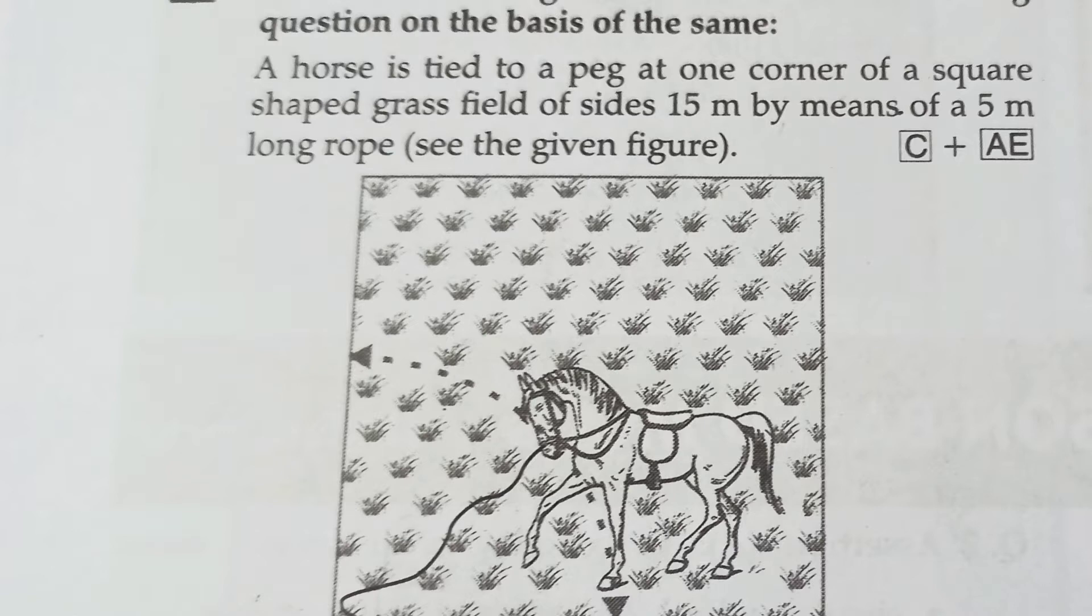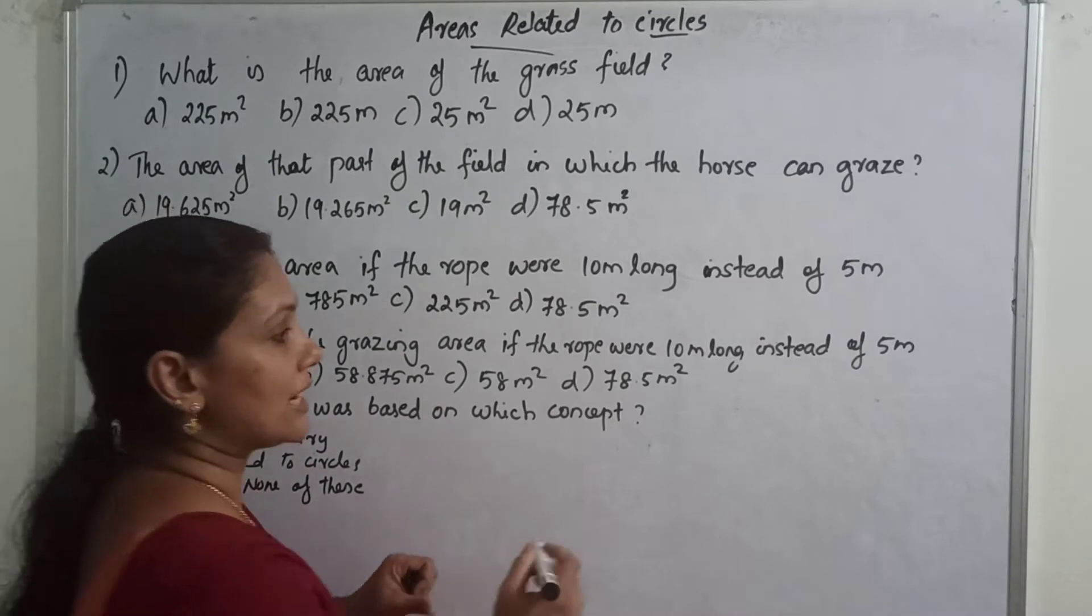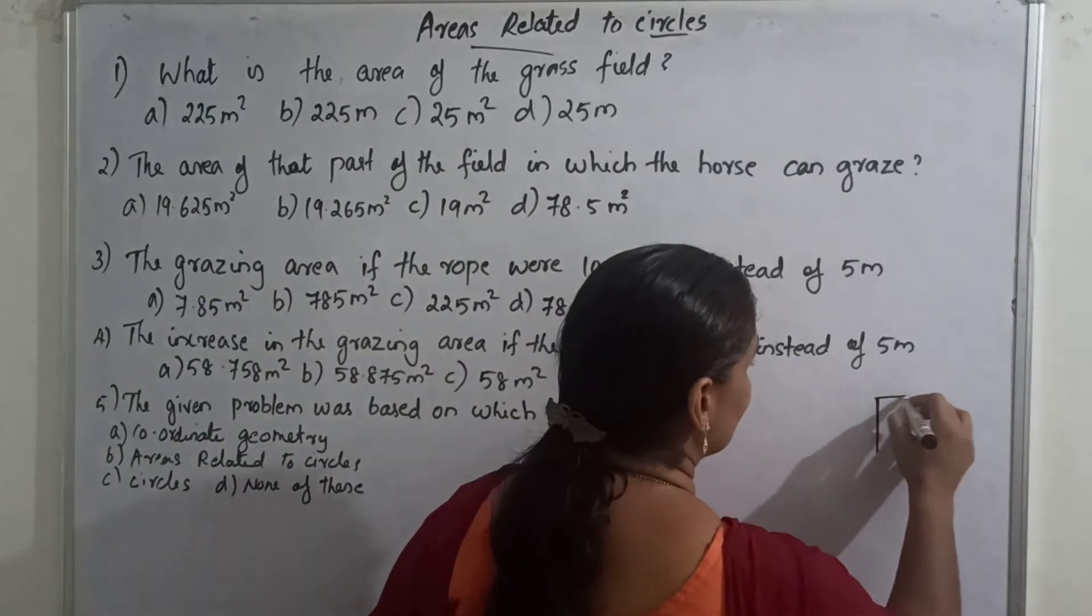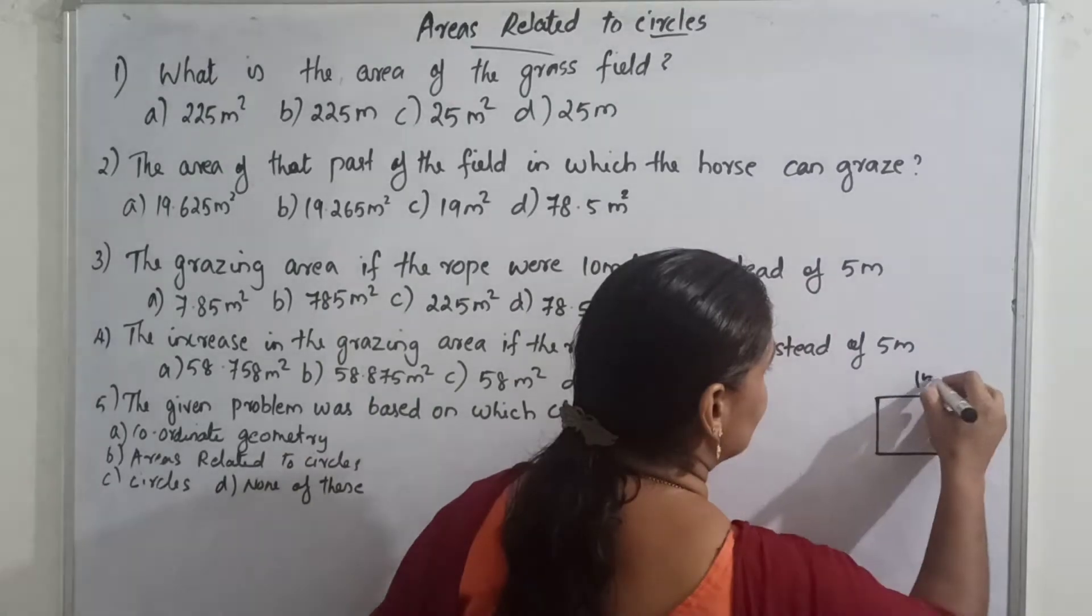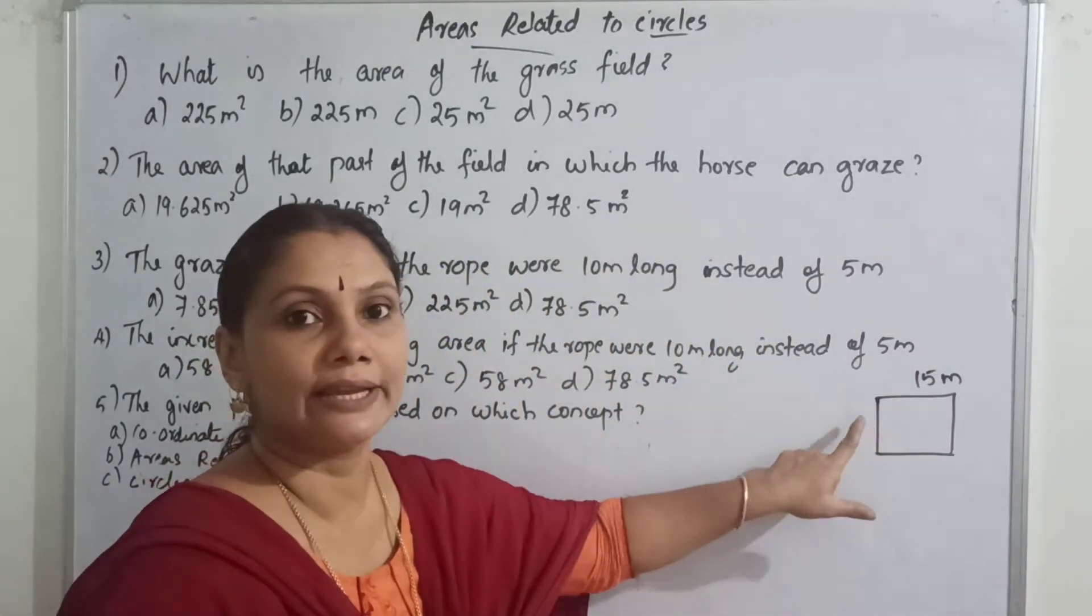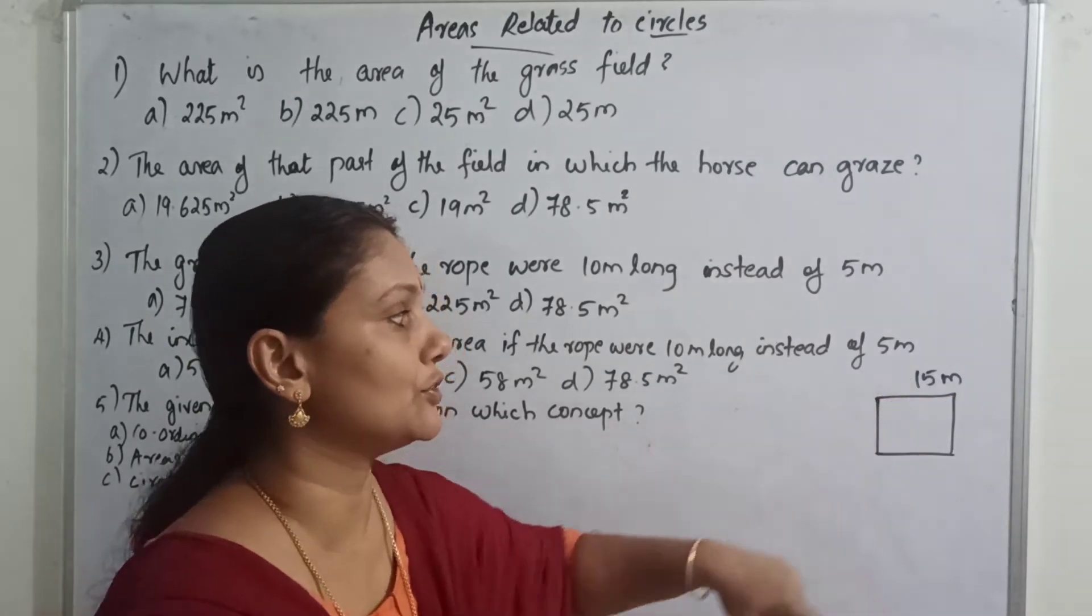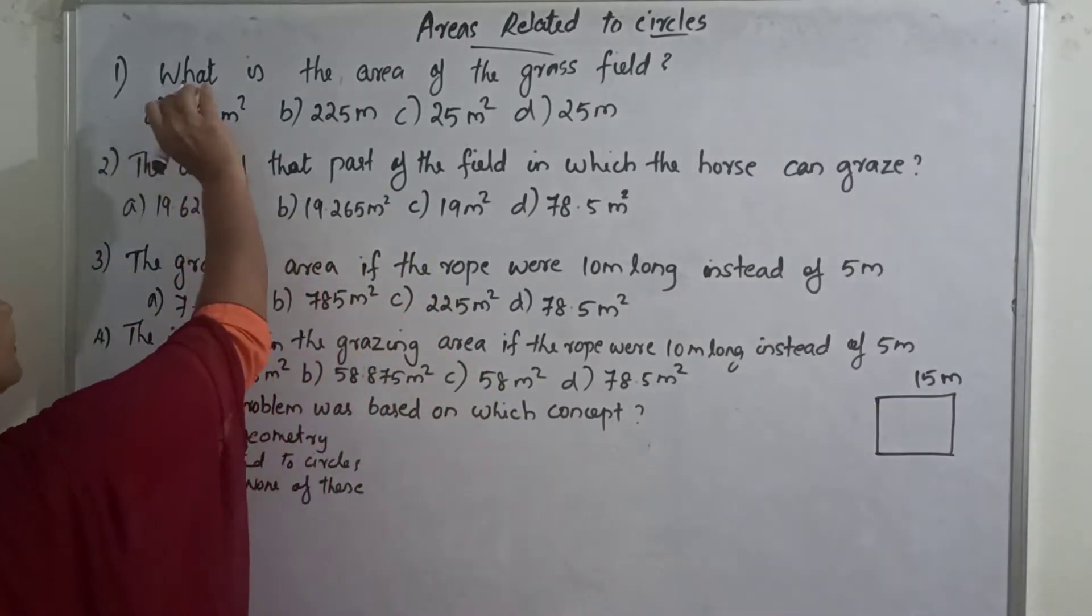What is the area of the grass field? Grass field is square grass field. The side length is 15m. Grass field is square. Square area is side into side. 15 into 15 is 225 m².